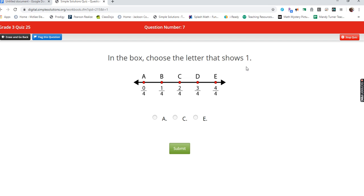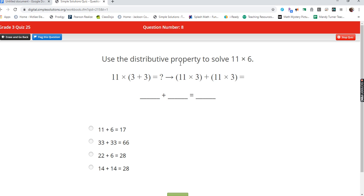Choose the letter that shows one whole. Well, we know that when our fraction, the top and bottom, are the same, that equals one whole. Use the distributive property to solve 11 × 6. Well, any number multiplied by eleven, any single digit number, is that number twice, so I know my answer is going to be 66. But I always solve parentheses first. Eleven times three is 33, eleven times three is 33.